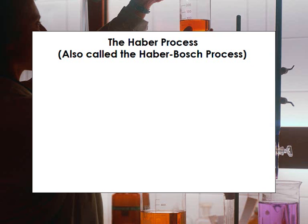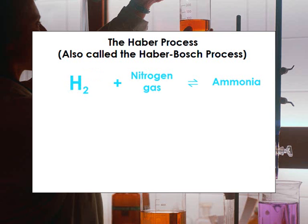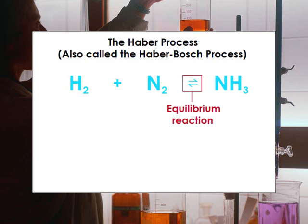Now that we know what this process is, let's write down an equation for it. Hydrogen gas and nitrogen gas are combined to make ammonia. In symbols, that is H2 plus N2 yields NH3. The double arrow indicates that the process is an equilibrium reaction that can go in either direction, and that depends on the conditions.